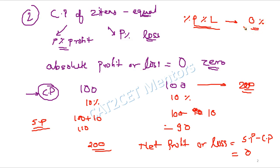So there is no profit and no loss in this transaction. Even if asked to calculate percentage profit or loss, it is also going to be zero. This is case number two, wherein the cost price of the two items is equal, compared to case one wherein the selling price of two articles was the same.